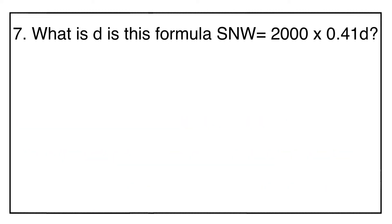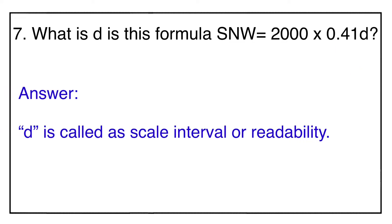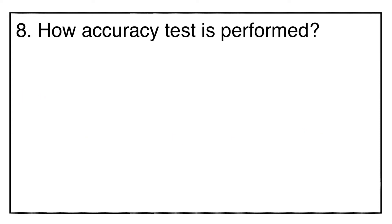Question number seven: what is 'd' in the formula for smallest net weight (2000 × 0.41d)? The answer is 'd' is called the scale interval or readability, which means the least value which your balance can read.